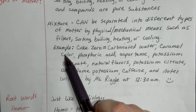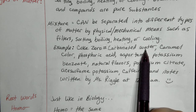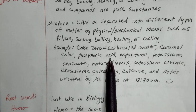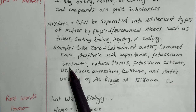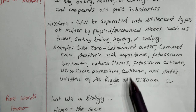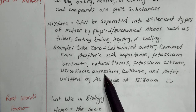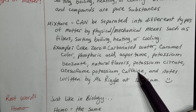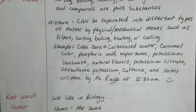An example of a mixture: my Coke Zero. It has carbonated water — that is carbon dioxide — caramel color, phosphoric acid (a compound), aspartame (a compound), potassium benzoate (compound), natural flavors, potassium citrate (compound), acesulfame potassium (compound), caffeine (a compound). So there are all sorts of compounds all mixed up into my soda, and that is a mixture because they're just mixed.